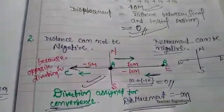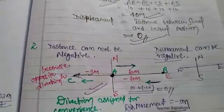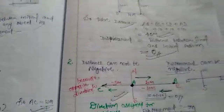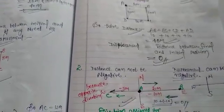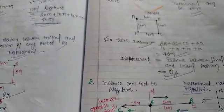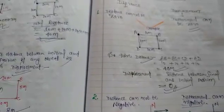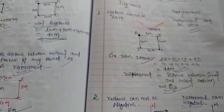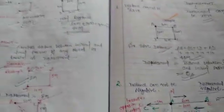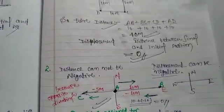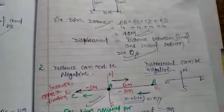So dear students, these are the initial topics of chapter Motion. I hope you all have understood these topics. For any query, you can contact me. After this topic, we will discuss speed, velocity, uniform speed, non-uniform speed, acceleration, uniform acceleration, and non-uniform acceleration. Thank you.